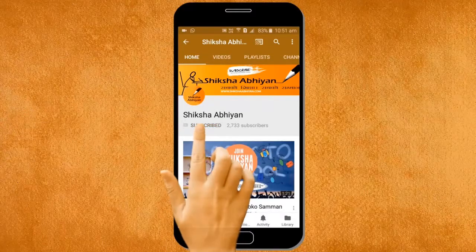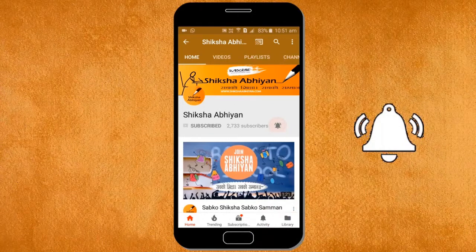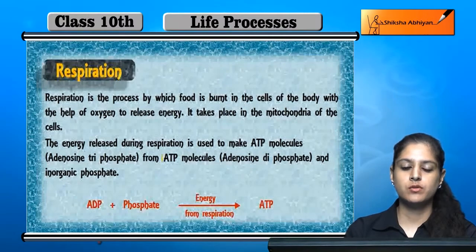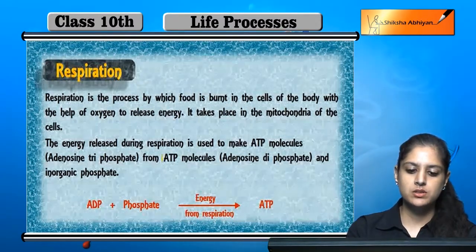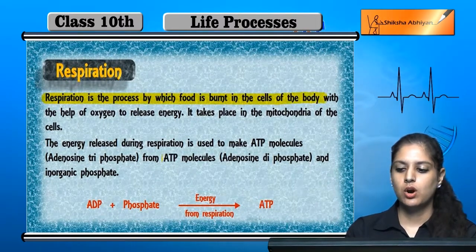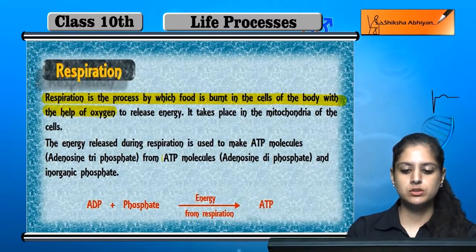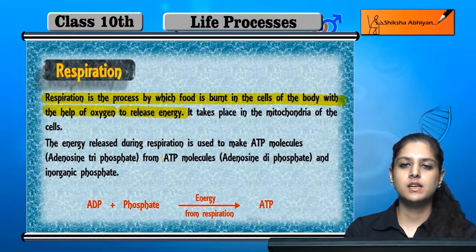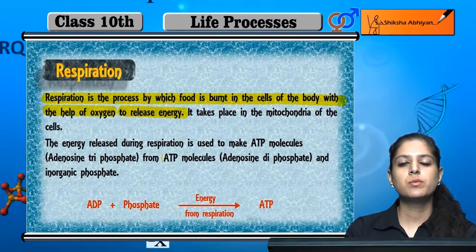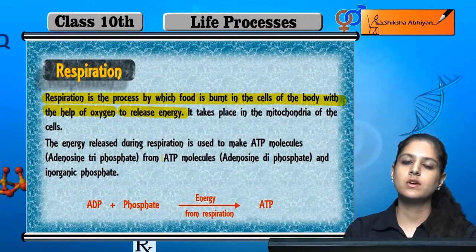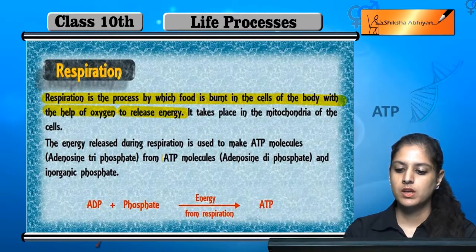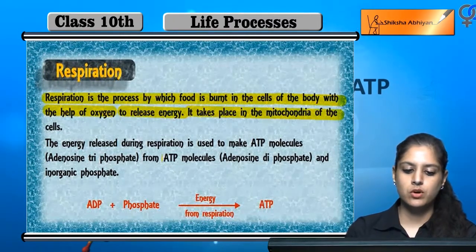Subscribe to our channel by clicking the subscribe button. Now, what is respiration? Respiration is the process by which food is burnt in the cells of the body with the help of oxygen to release energy. We take in oxygen and food for energy, so food and oxygen help the food burn and ultimately energy is produced in the mitochondria of the cells.